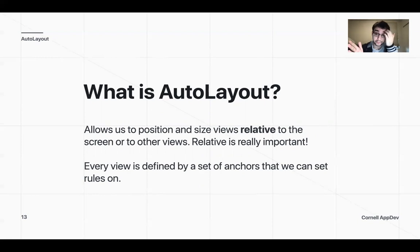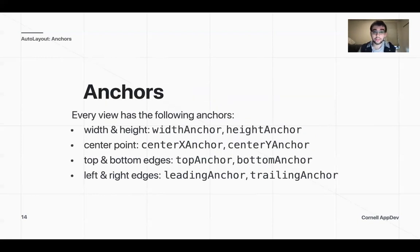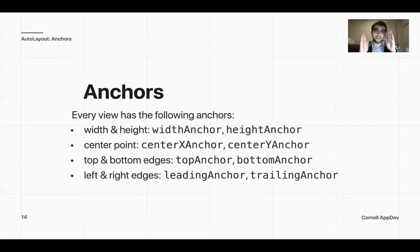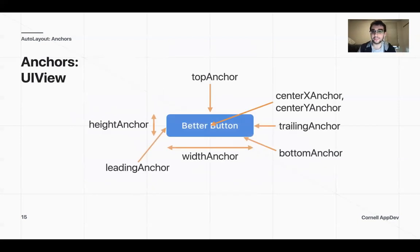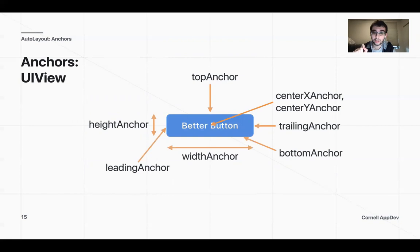Every view has a set of anchors. Every view has a width and height. There's also a center to every view. You have your top and bottom anchors, and you also have your leading and trailing anchors. Your center X anchor and center Y anchor represent your middle — if you constrain your view using these two, you can actually center your views. The leading is on the left while the trailing is on the right.